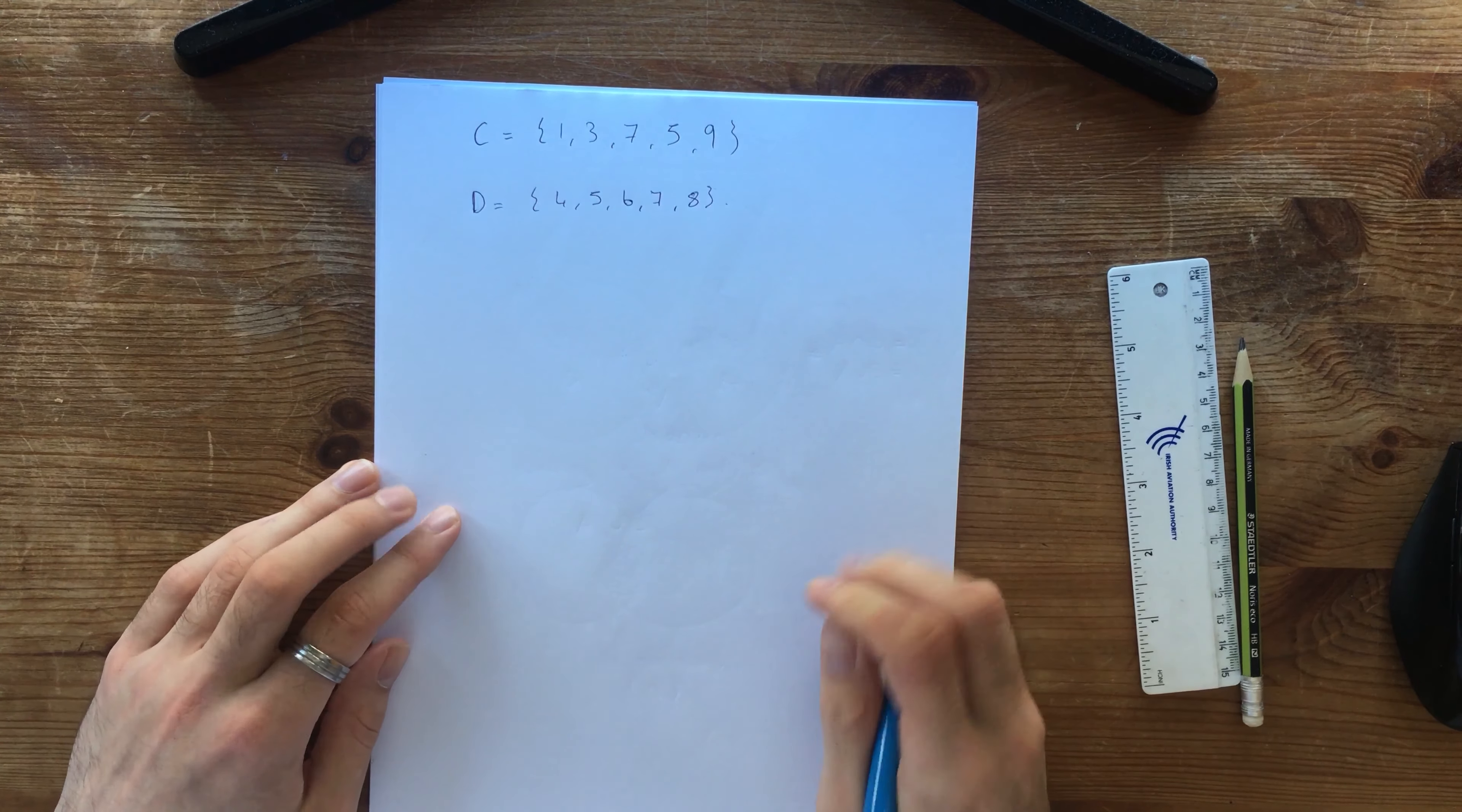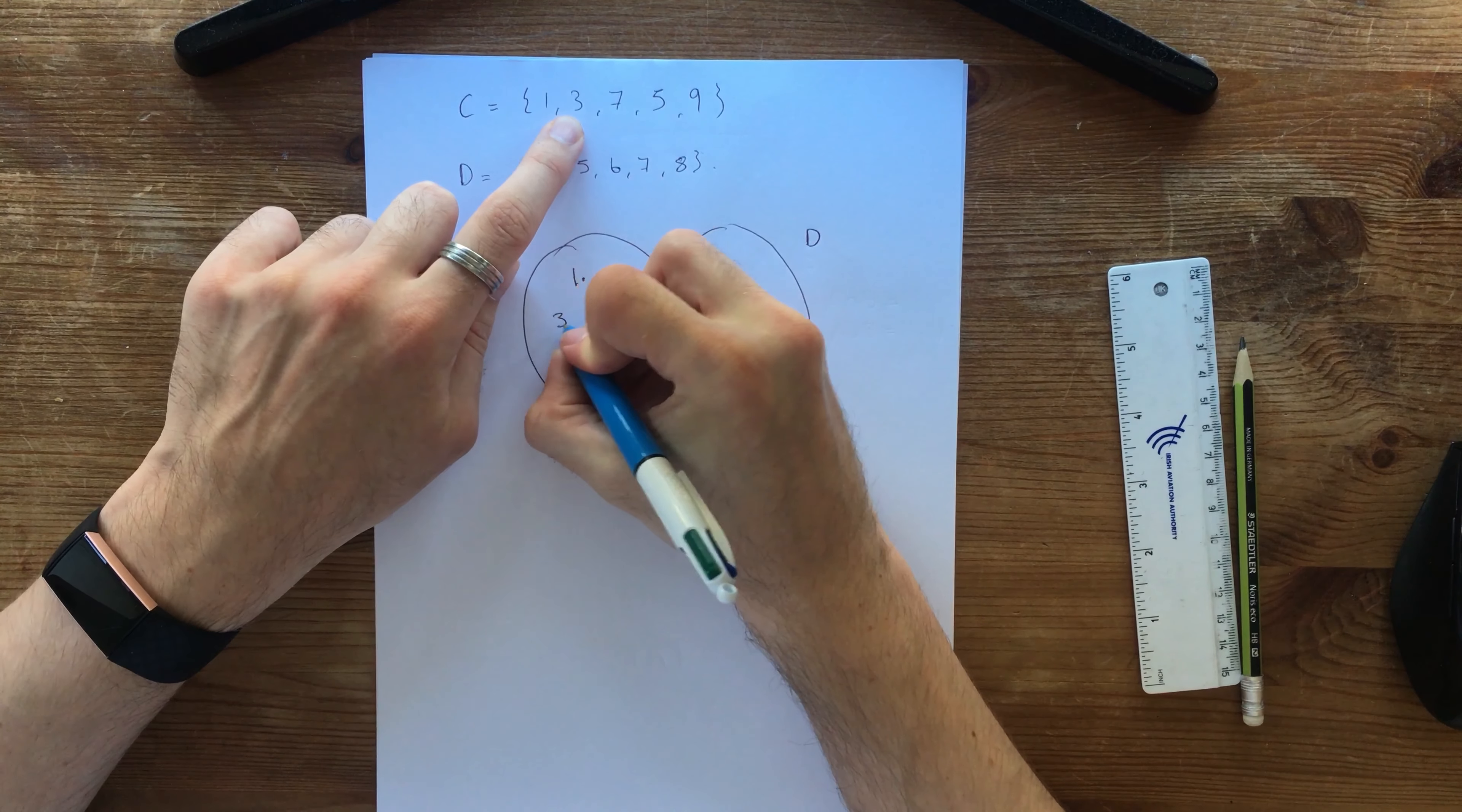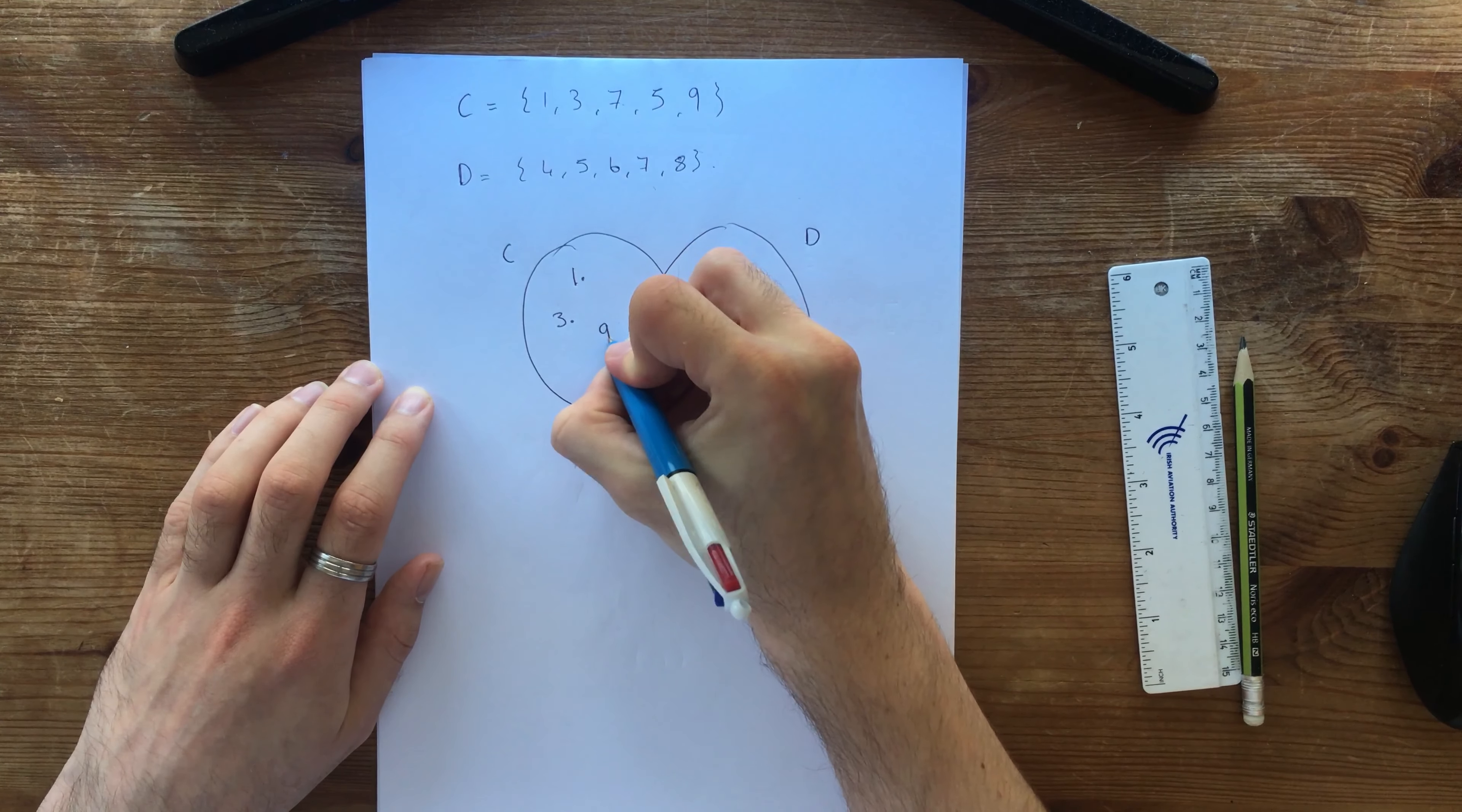Yeah, that's good. Okay. So let's draw this as a Venn diagram. So we've got two circles. We've got C and D. First of all, what's in C? We've got 1 is in C. 3 is in C. 7 is in C but it's also in D. 7 is in both of them so we put 7 in the middle. 5 is in C and D. So C, that can go in the middle. And 9 is only in C so we put it over here.